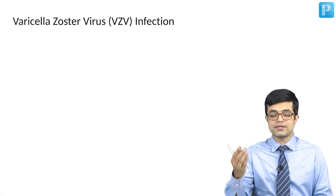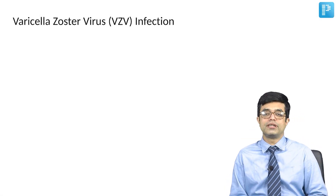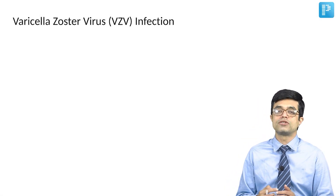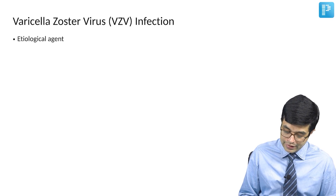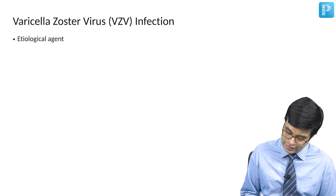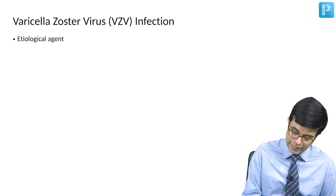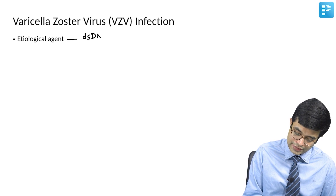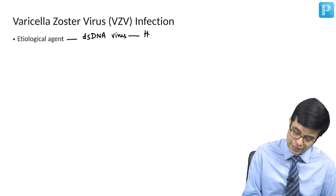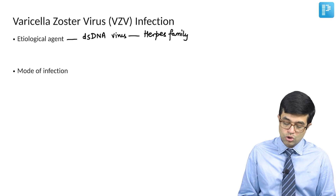Moving over to the next infection: varicella zoster virus infection. The etiological agent is the varicella virus, which is a double-stranded DNA virus belonging to the herpes virus family.